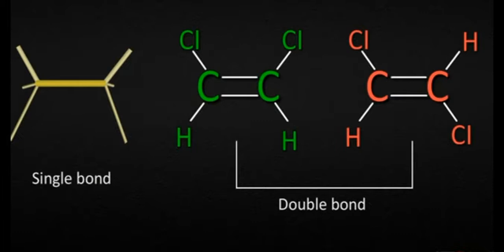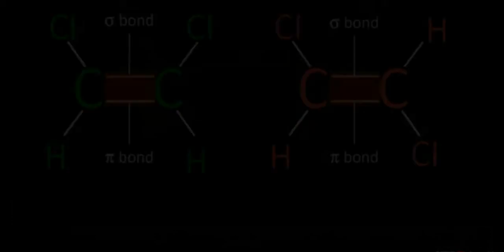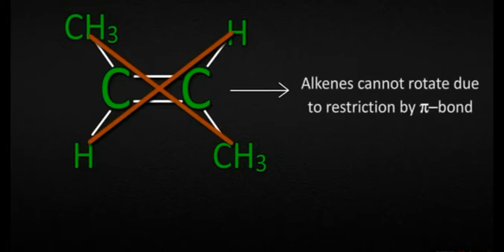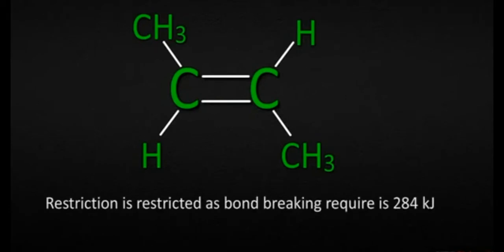The phenomenon is known as geometrical isomerism. A double bond consists of a sigma bond and a pi bond. Due to the presence of the pi bond, the groups or atoms attached to each sp2 hybridized carbon atom cannot rotate about it. They can do so only by breaking the pi electron cloud, which requires energy of the order of 284 kilojoules.